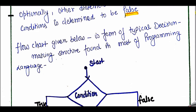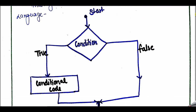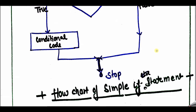With the help of a flowchart I am going to explain the working of a decision-making statement. Here some condition is given — if the condition is true then we execute the conditional code, and if the condition is false we don't perform any additional operation, we just go to the rest of the program and then stop.